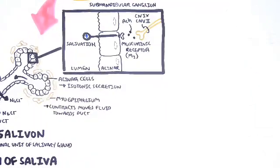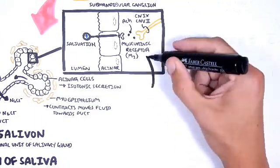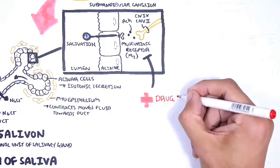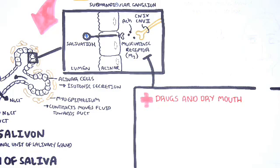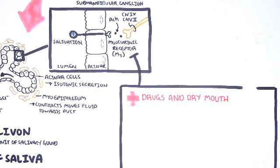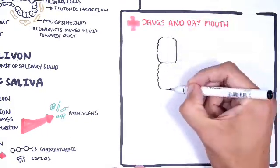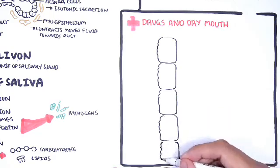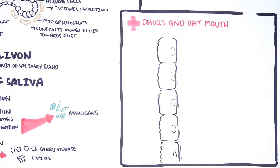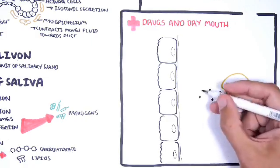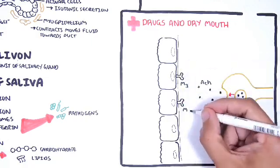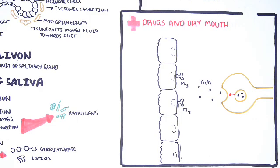Thus, by inhibiting muscarinic receptors or inhibiting this interaction between acetylcholine and the receptor, you can really cause dry mouth. Clinical pharmacology: looking at drugs and dry mouth. Many drugs can cause a dry mouth. Remember, the parasympathetic neuron secretes acetylcholine which binds onto muscarinic receptors on the basal surface of the acinar cells.